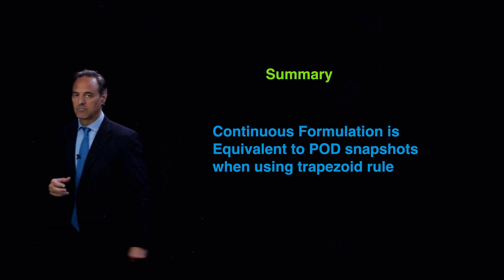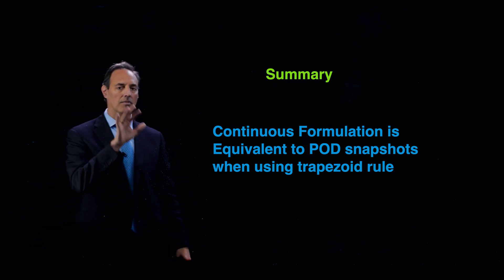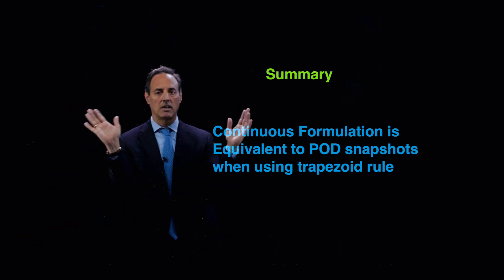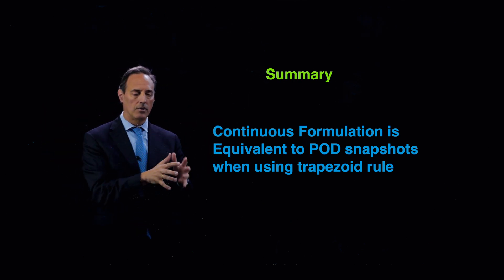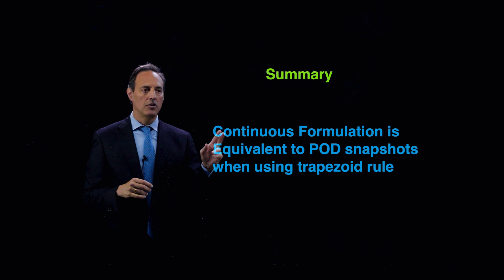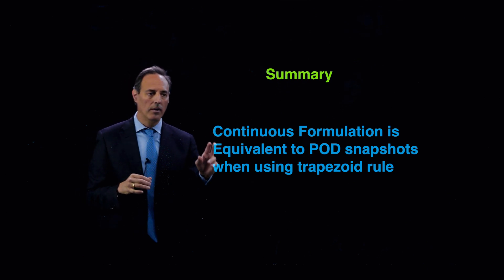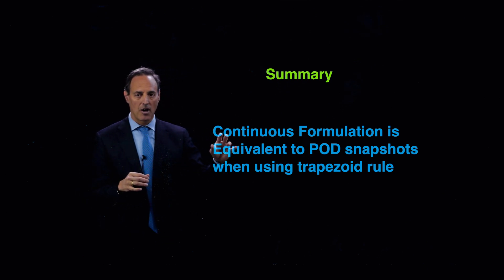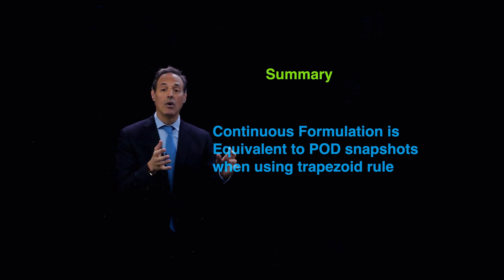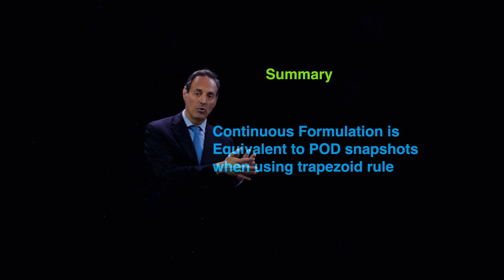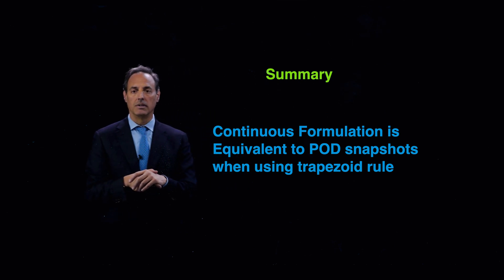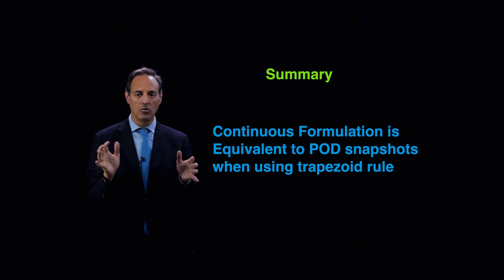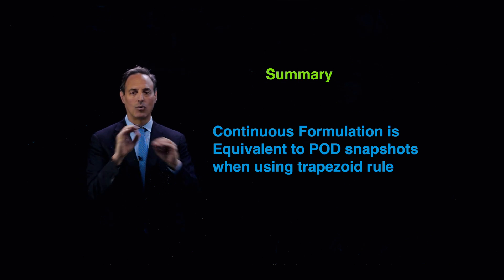So let me try to give you the summary statement. This is very important of making this connection between a continuous formulation to a discrete formulation. In the continuous formulation, it is equivalent to the POD snapshot methods that we've been talking about when you use the trapezoid rule to evaluate your time integration piece that's inside of that continuous formulation. And if you do that, they are exactly equivalent.